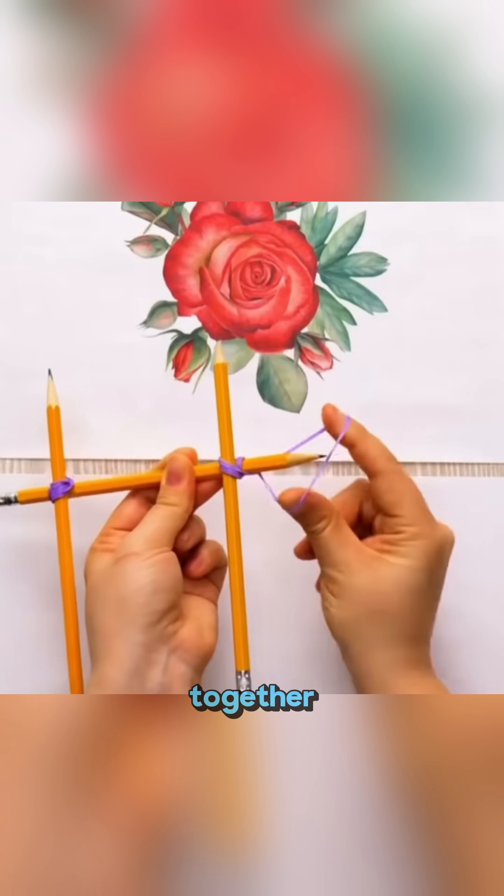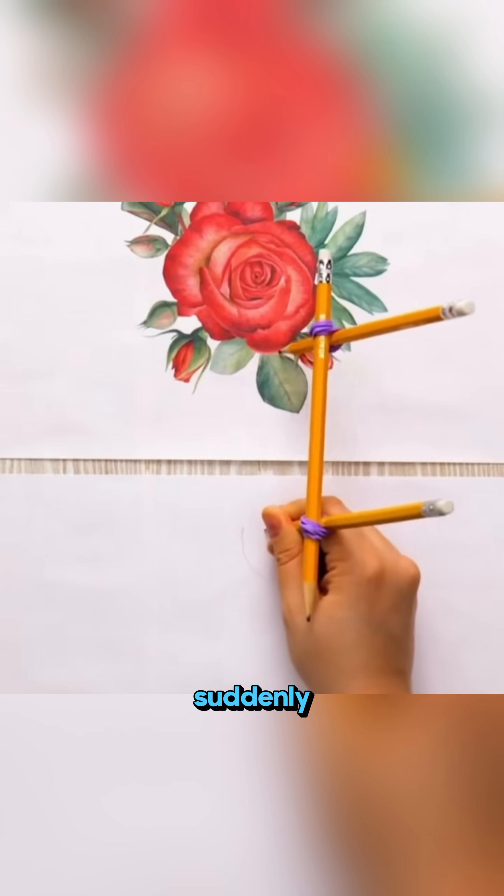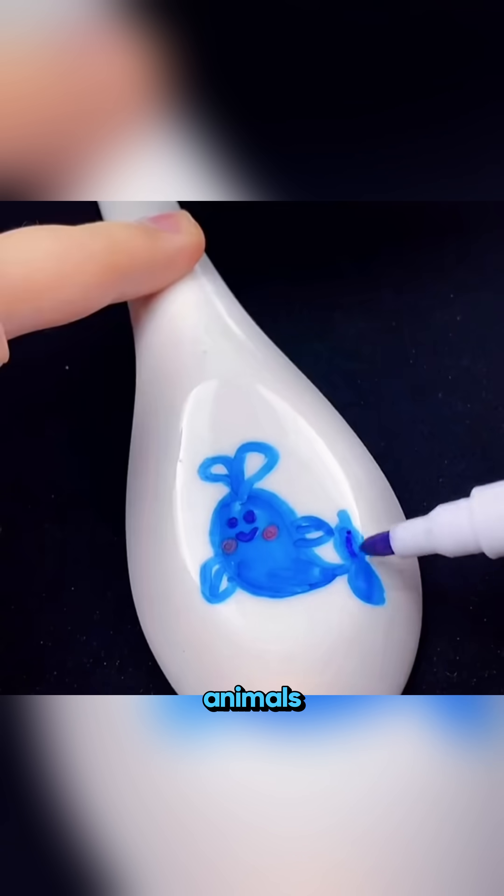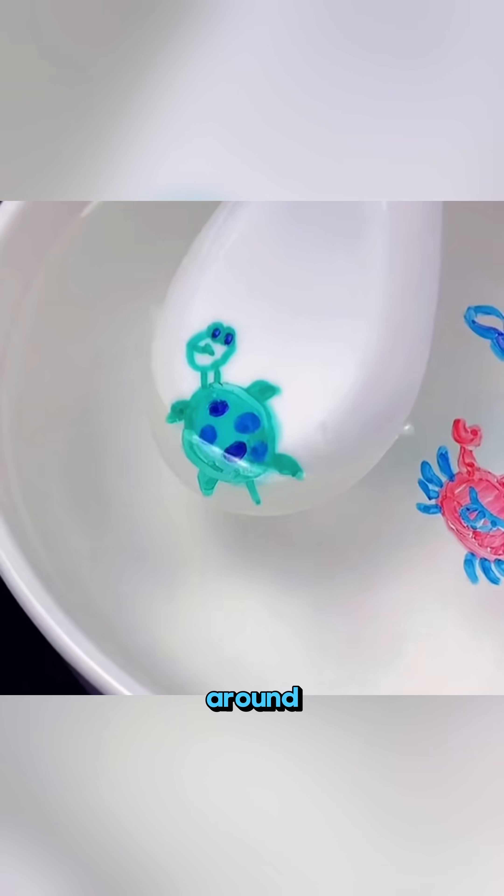Fix three pencils together with a rubber band and suddenly you can trace any picture perfectly. Draw little animals on a spoon, dip it into water, and they come to life, swimming around like magic.